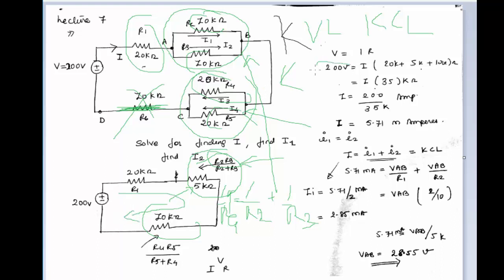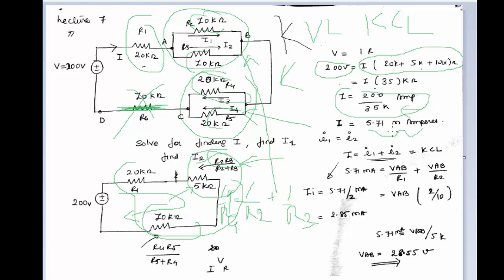When applying Kirchhoff's Voltage Law in the circuit, the 200 volt source is written as-is. You write the voltage drop across all the resistances, since they are now all in series. Combining them in series, you get the current as 200 divided by 35 kilo ohm, which comes out to approximately 5.71 milli ampere.